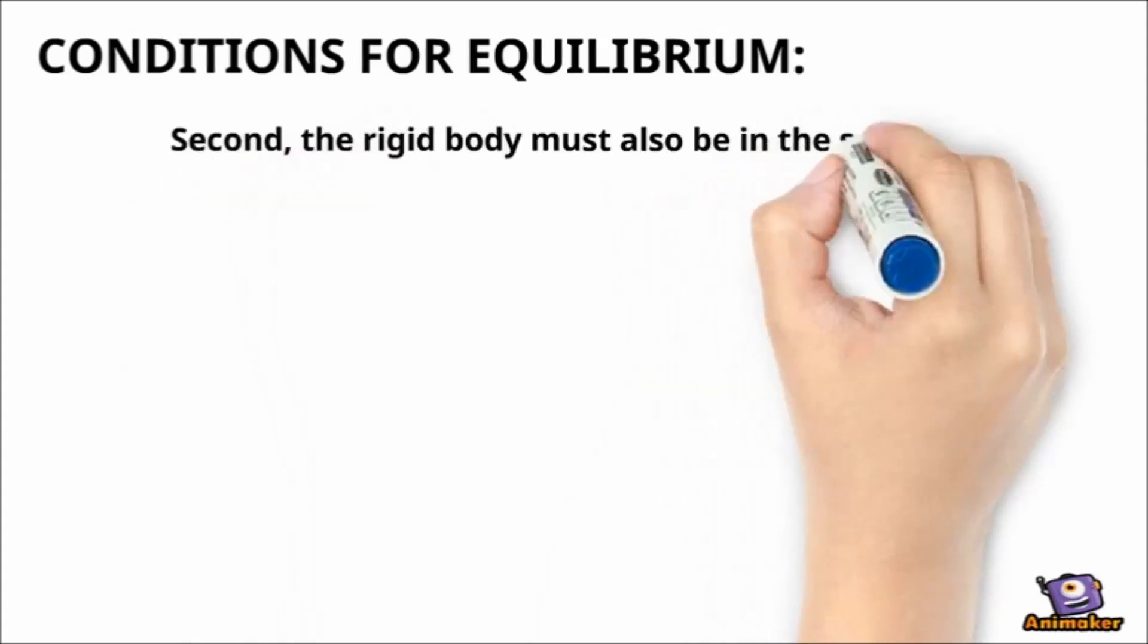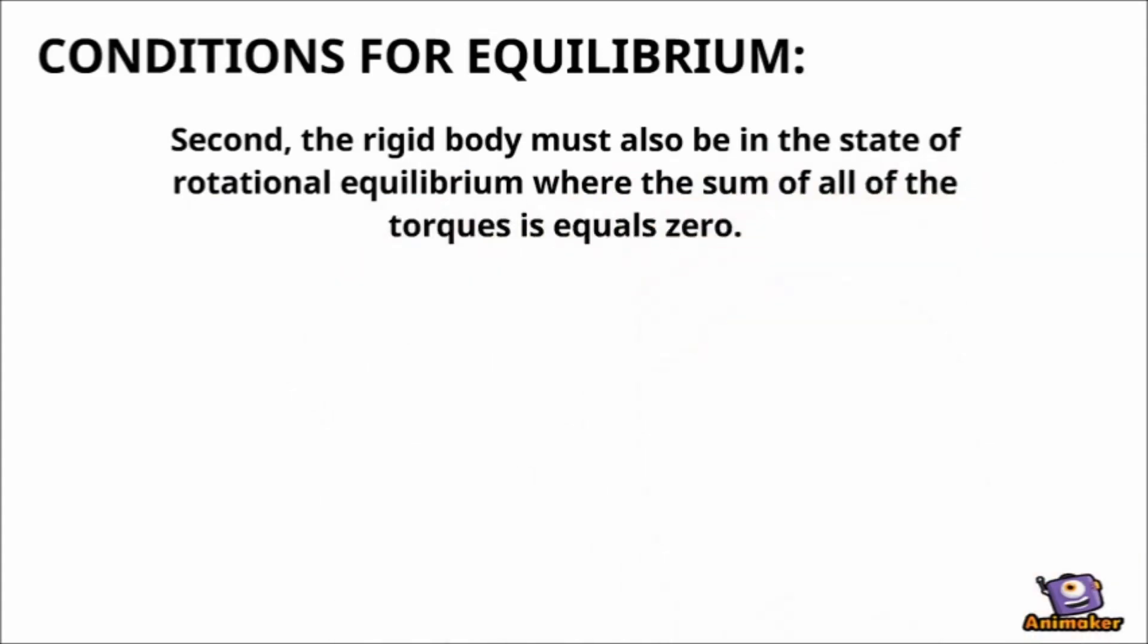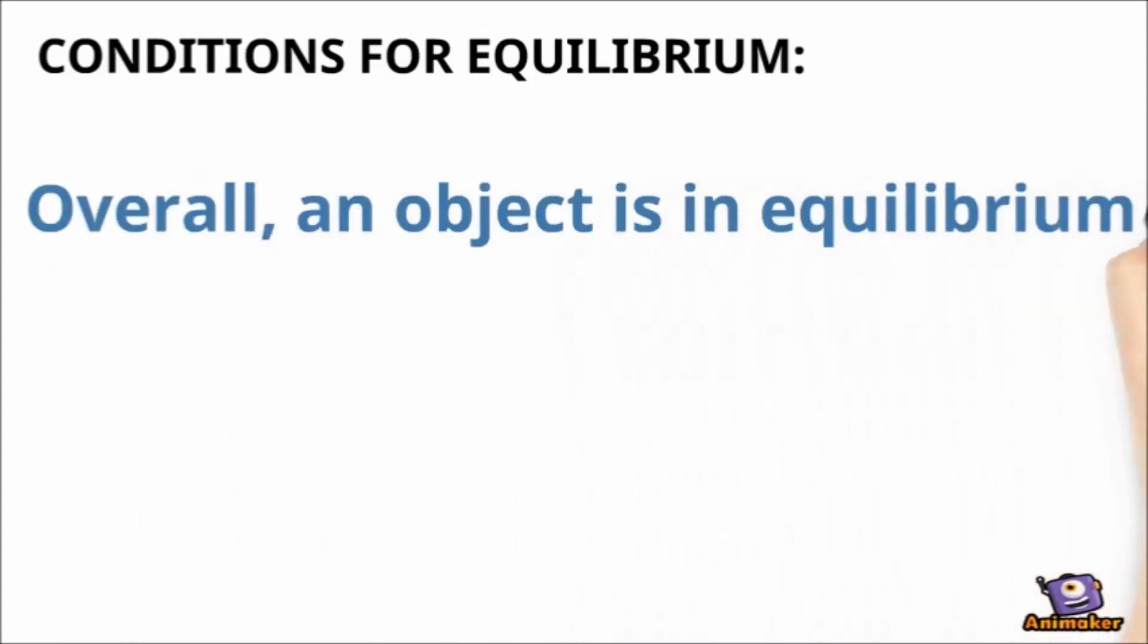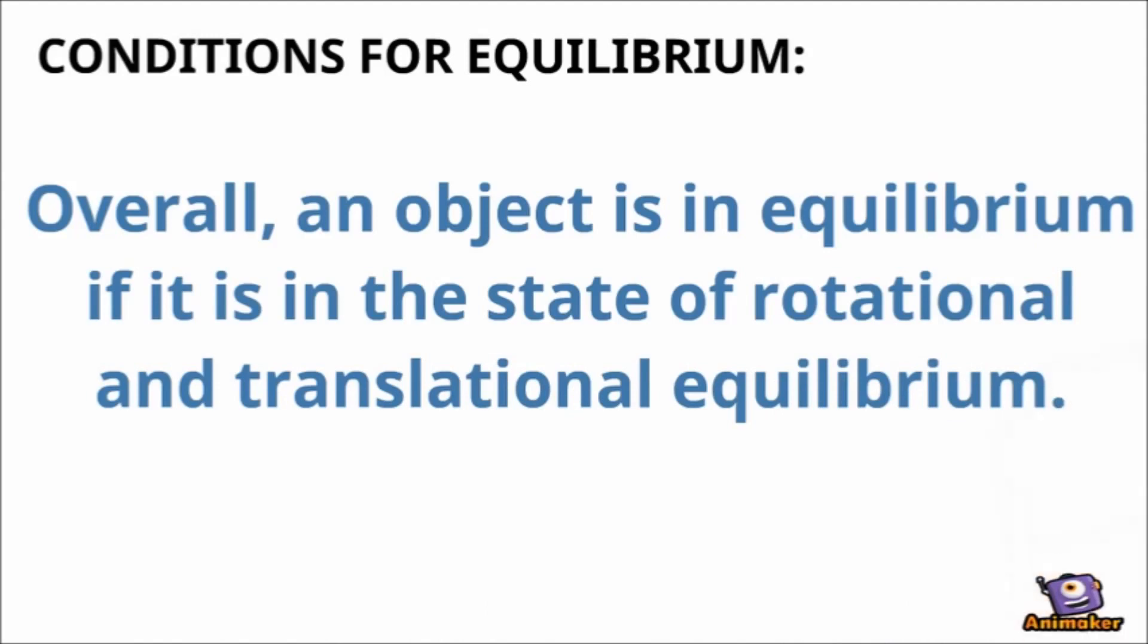Second, the rigid body must also be in the state of rotational equilibrium wherein the sum of all torques is equals zero. Overall, an object is in equilibrium if it is in the state of rotational and translational equilibrium. Ayesha can you show them an easy example?